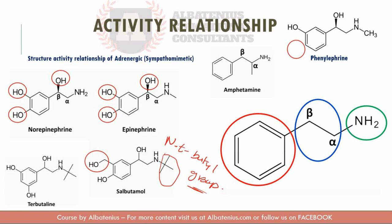Looking at norepinephrine, the amino group is unprotected, so it will be easily metabolized by MAO. Compared to salbutamol and terbutaline, whose amino groups have large substituents, norepinephrine has a shorter duration of action.